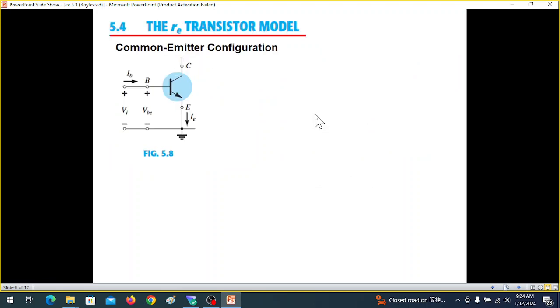Now there is a model called RE transistor model and we'll discuss for common emitter configuration. This is the transistor in common emitter mode. Emitter is grounded. That is why it's called common emitter. And this is input voltage, which is also equal to VBE. That is the base emitter voltage. We can further draw it or simplify it by knowing that base emitter is nothing but a diode. So we replace that by a diode and the current IE through the diode.